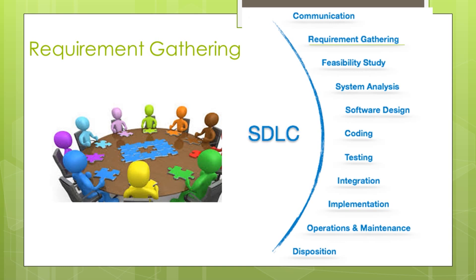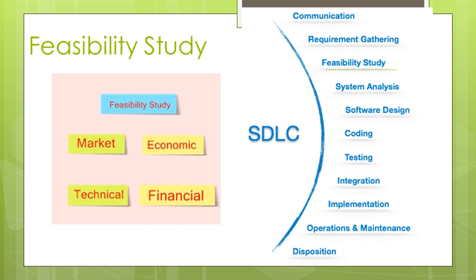Other practices include conducting interviews of users and developers and collecting answers from questionnaires. The next step is feasibility study. After requirements gathering, the team comes up with a rough plan of the software process. At this step, the team analyzes if the software can be made to fulfill all requirements of the user.